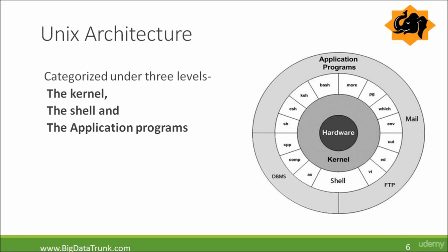Then there are utility programs. They give the user most of the functionality of the operating system. In Linux distributions, they typically come with several useful application programs as standard — for example, a text editor, an image viewer, a C compiler, or a drawing package.